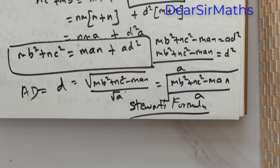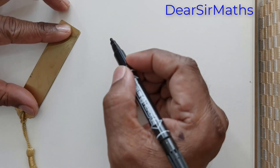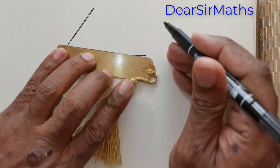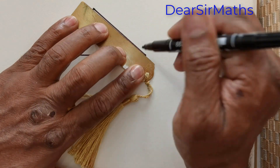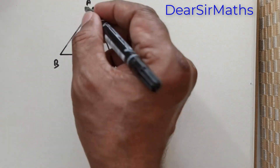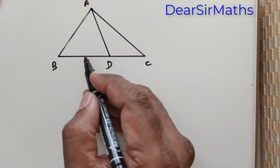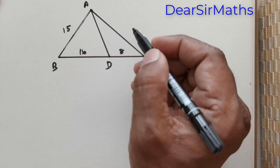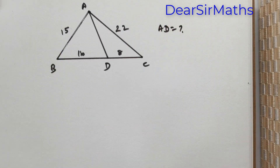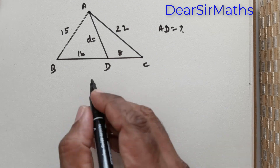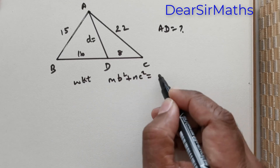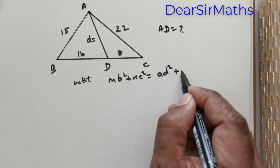Thank you everybody. Now I will show you how to apply this in the next class. Let's do this question. We have a triangle and we are expected to find AD. We draw triangle ABC where AD is a line drawn from vertex A to side BC. Stewart's formula states: MB squared plus NC squared equals A times D squared plus MAN.